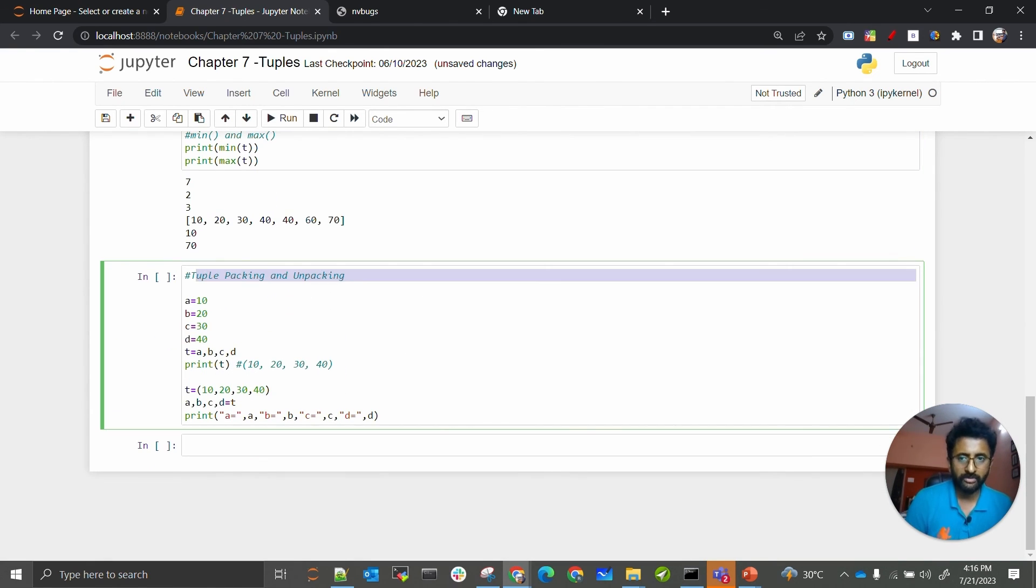And then there is one more concept of tuple packing and unpacking. That means whenever you are defining different identifiers or variables with different values, you can combine all of them together. What I did—we know that without parentheses also we can define a tuple. So I am just taking a, b, c, d and assigning it to another identifier or variable named t. Now this t will be considered as a tuple.